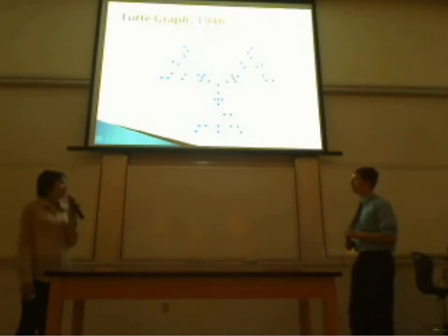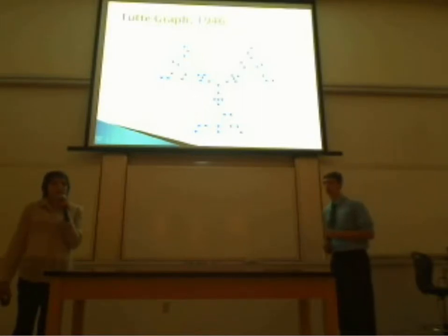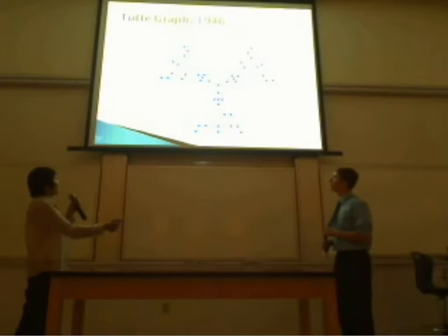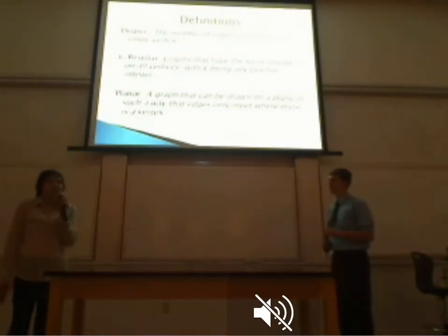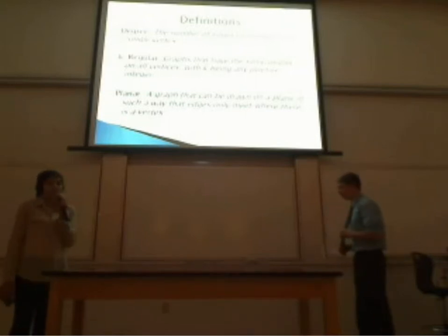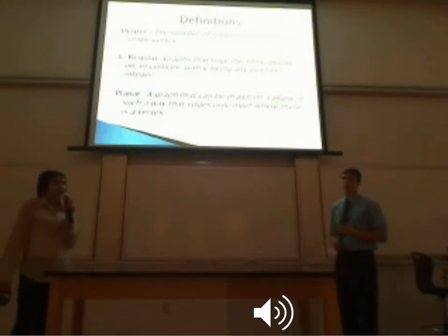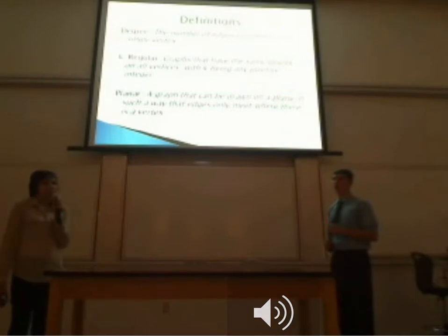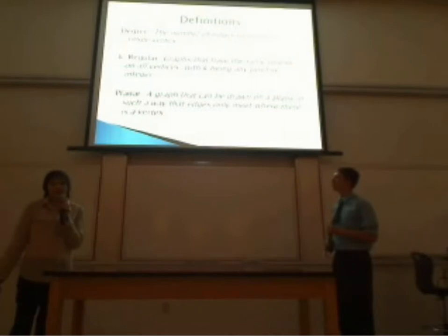So just to reiterate, the degree is the number of edges coming off of a vertex. K-regular is graphs that have the same degree on every vertex, and planar is a graph that can be drawn on a plane in such a way that no edges intersect without there being a vertex.